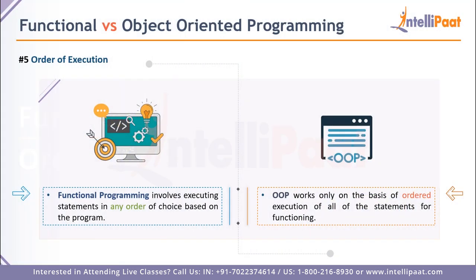Point five is order of execution. In functional programming, statements can run in any order — a statement at line three can jump to line ten, back to four, five, six, eight — in any order and it still works. OOP is stricter because there has to be a particular execution order. Think of the car example: you have to start the car before it moves, you can't turn it on without the key. With OOP, certain steps must be followed in an ordered way.